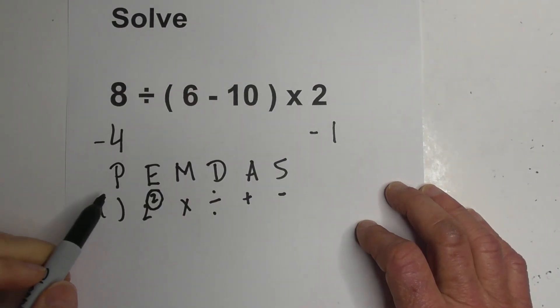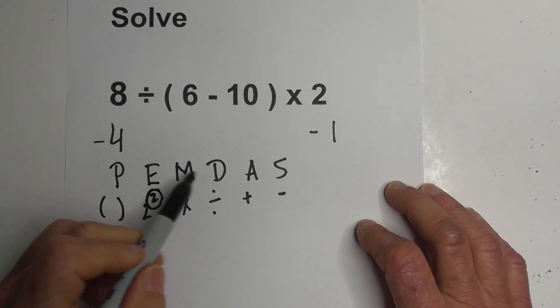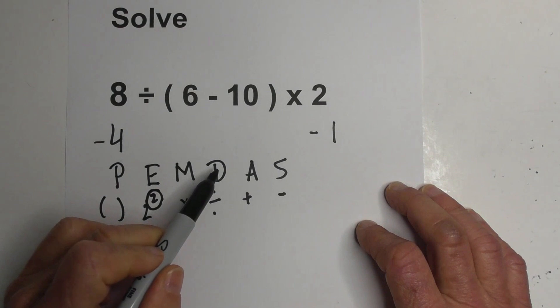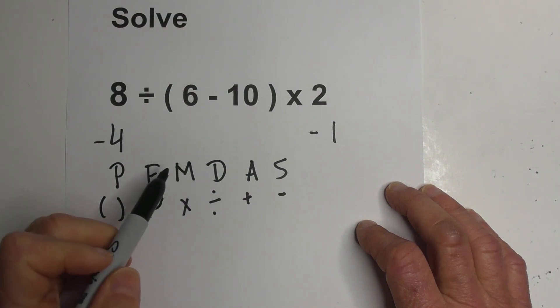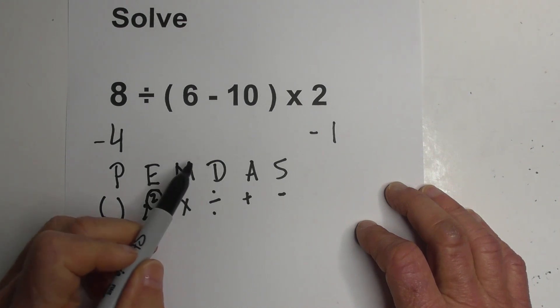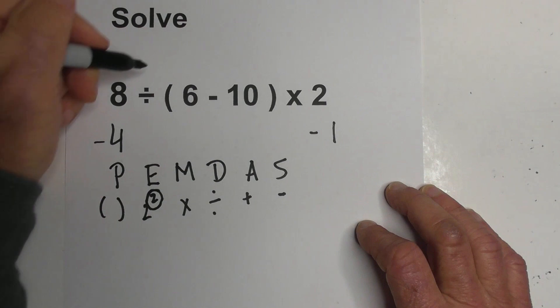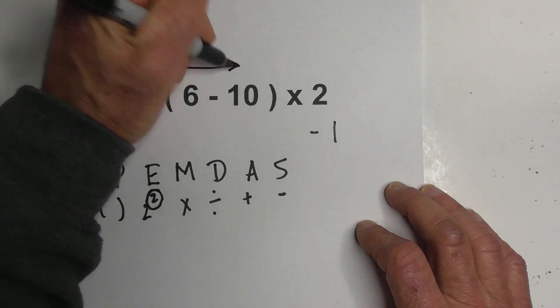The parentheses and exponents are pretty straightforward. Now, when you get to multiplication and division, it doesn't mean that if you see multiplication first, you go multiplication, or you see division first. They are equal. Remember, you always work from left to right.